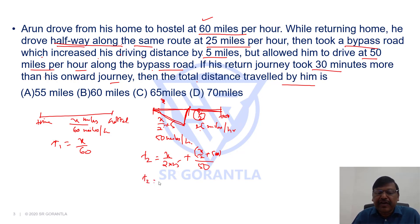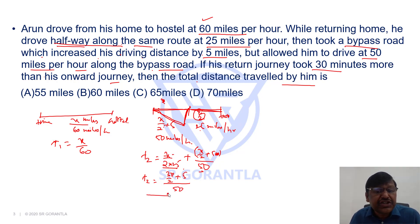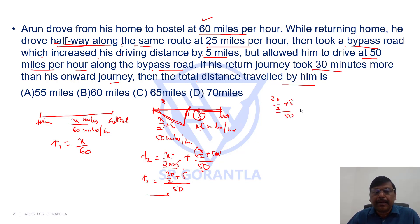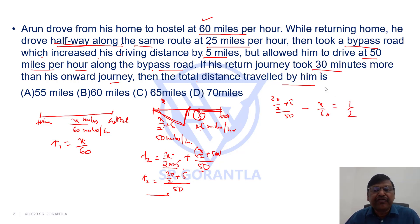If you simplify, the common denominator is 50. Adding the numerators: x plus x by 2 gives 3x by 2, so the total return journey time is 3x by 2 plus 5, all divided by 50. This return journey time minus the onward journey time x by 60 should equal 30 minutes, which is half an hour. Since speed is in miles per hour, time must be in hours, so it equals 1 by 2.